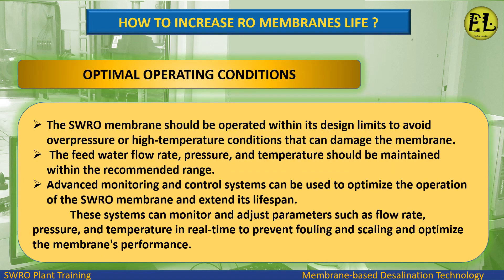The SWRO membrane should be operated within its design limits to avoid overpressure or high temperature conditions. The feed water flow rate, pressure, and temperature should be maintained within the recommended range. Advanced monitoring and control systems can be used to optimize the operation of the SWRO membrane and extend its lifespan, monitoring and adjusting parameters such as flow rate, pressure, and temperature in real time to prevent fouling and scaling.